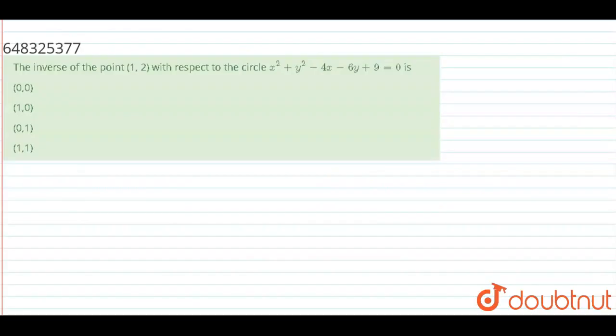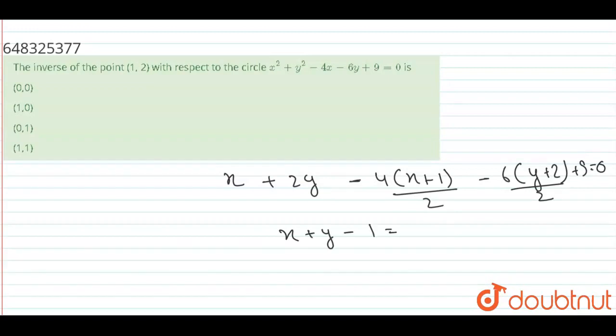Hello everyone, let's start this problem. First of all, we have to find the equation of pole. I have to write x plus 2y minus 4x plus 1 upon 2 minus 6y plus 2 upon 2 plus 7 equals 0. Then we get x plus y minus 1 equals 0.